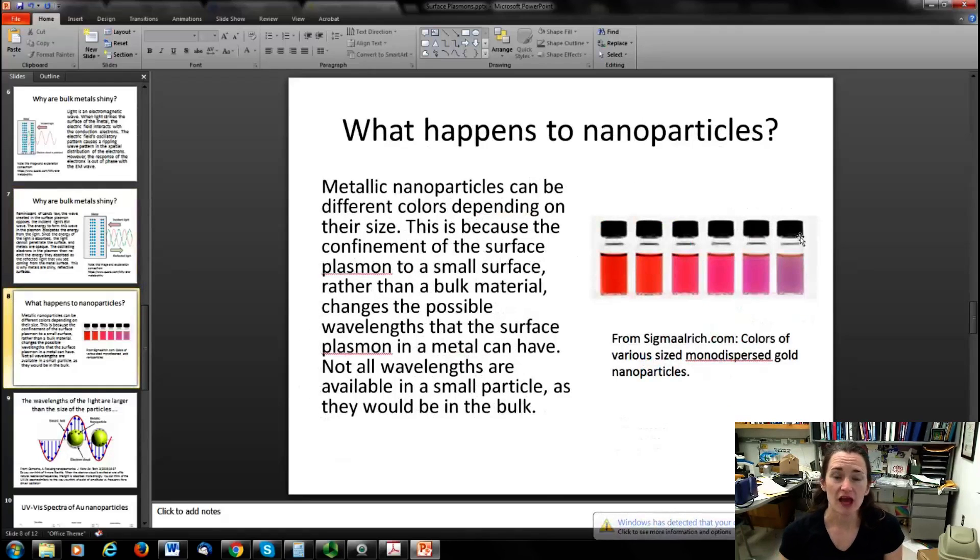Now, you may have remembered from an earlier lecture that metallic nanoparticles like gold can be different colors depending upon the size of the nanoparticle. Now, the reason is because the metallic surface within a nanoparticle is very, very, very small. So what you're doing is you're confining the surface plasmon to a very small surface rather than the bulk material. And that changes the possible wavelengths that the surface plasmon in the metal can have. Not all the wavelengths are going to be available in a small particle as they would be in the bulk.